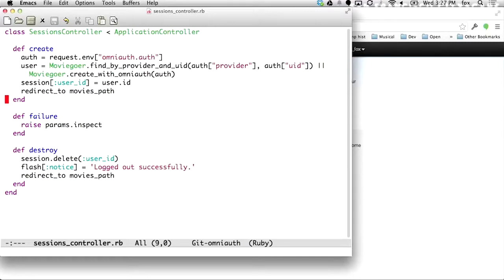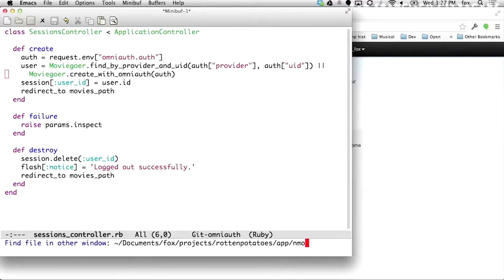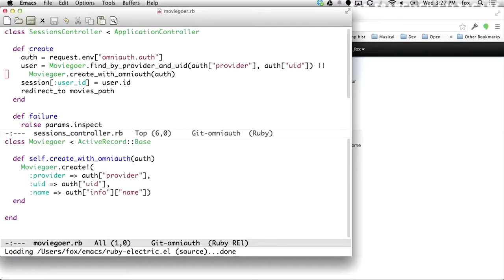so what about this create with OmniAuth? What's going on there? Let's go look at the model. So what does create with OmniAuth do? Well, the premise here is I've never seen this user, right? Because if I had seen them before, I would have recorded their Twitter provided UID as part of the, I would record their Twitter provided UID as the UID attribute of that person in the moviegoers table.